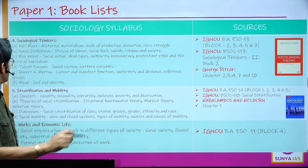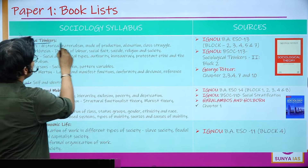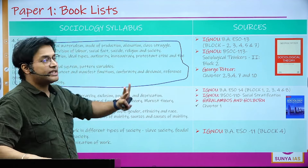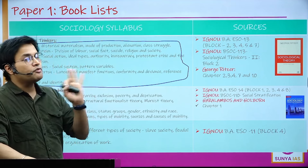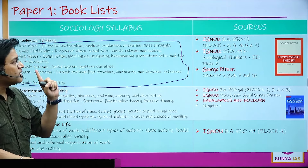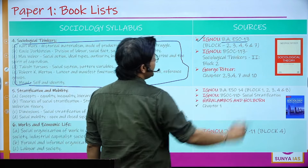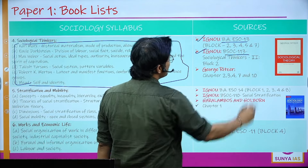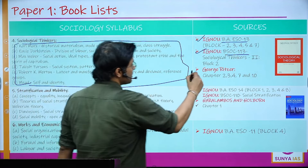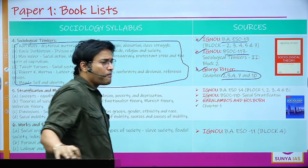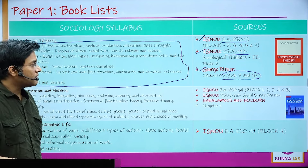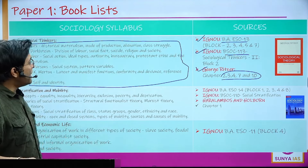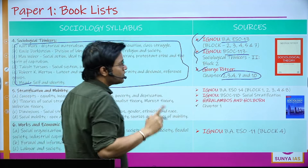The next unit is Sociological Thinkers — the heart and soul of sociology. Once you read and understand this part, everything starts unfolding, connecting all units of both Paper 1 and Paper 2. Refer to IGNOU BA ESO-13, Blocks 2, 3, 4, 5, and 7, and IGNOU BSOC-113 Sociological Thinkers Block 2, along with George Ritzer, which covers Karl Marx, Emile Durkheim, Max Weber, Talcott Parsons, R.K. Merton, and George Herbert Mead. Start with IGNOU since it uses simpler language.